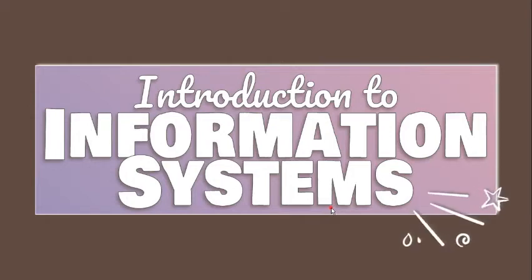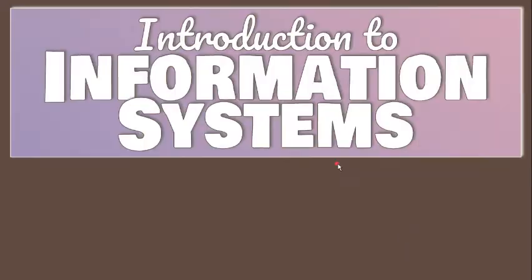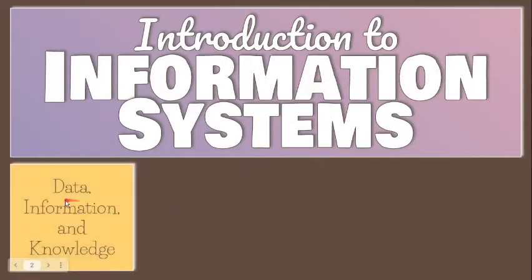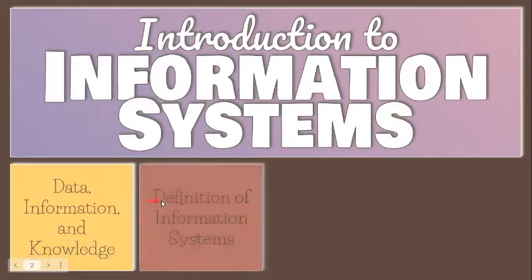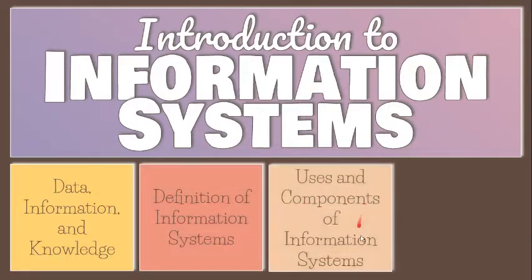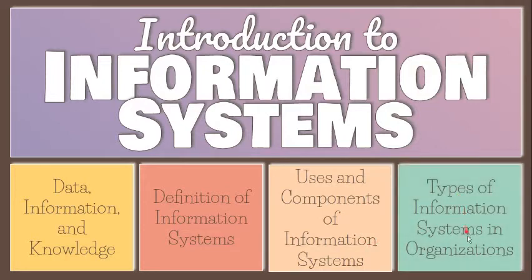In this video, we are going to learn about the difference of data, information, and knowledge, the process of transforming data into information, and the characteristics of quality information, the definition of the term information systems, its uses and components, the three types of information systems used in organizations, and the organizational complements to ensure successful implementation and use of systems.